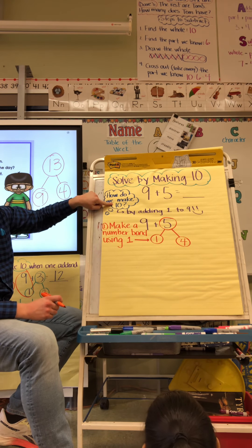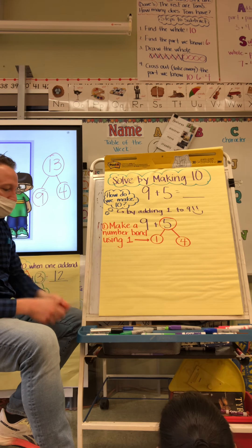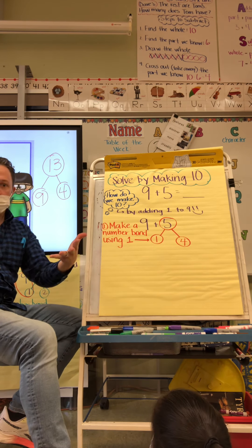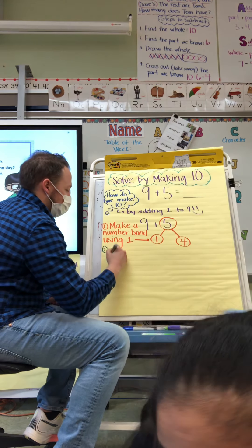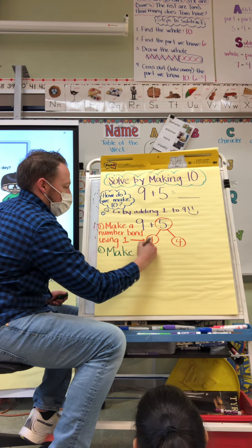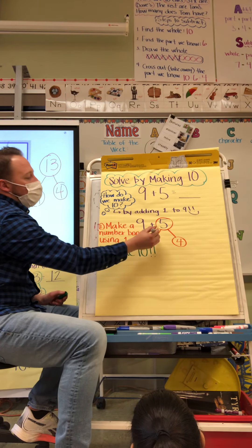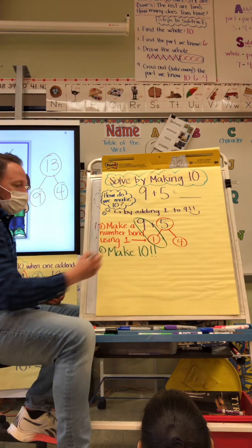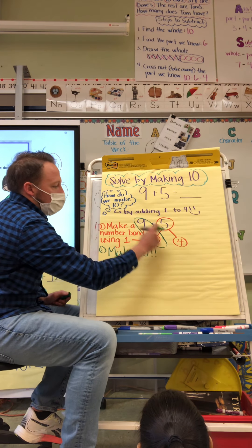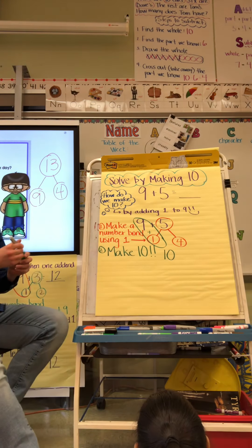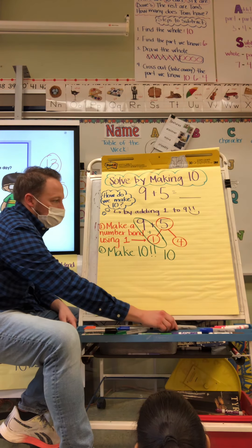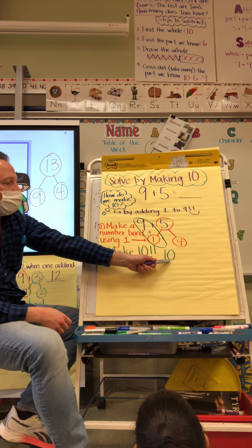Next, what do I do? I'm looking to make ten, so my second step is going to be to make ten. I'm gonna make my ten. I know that nine and one is ten — nine plus one is ten. Now what do I do next?